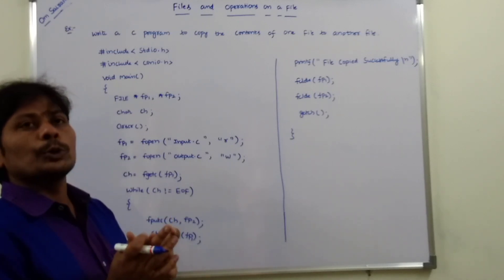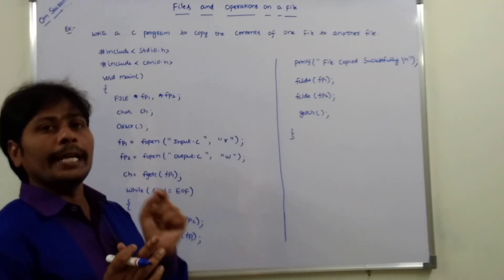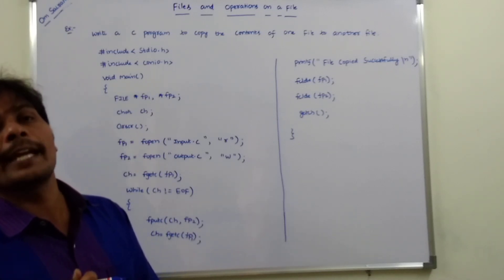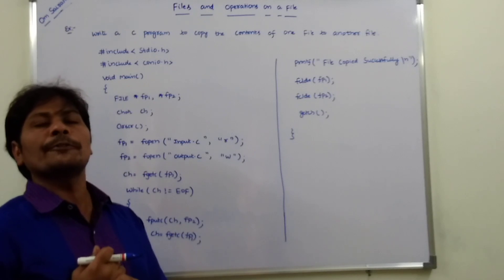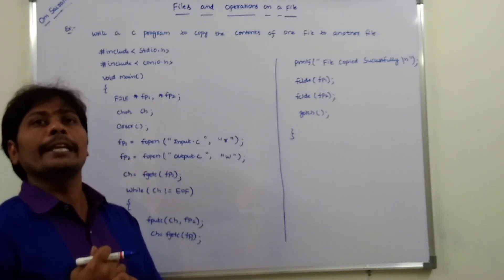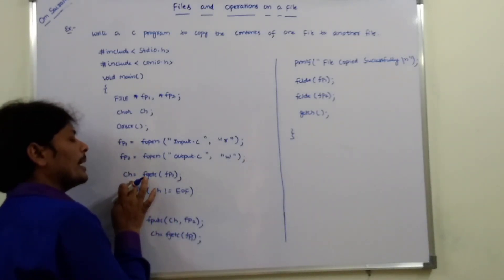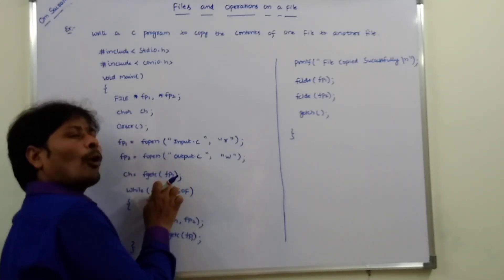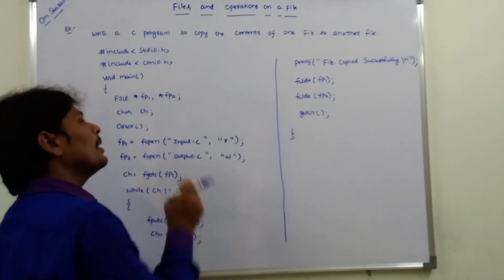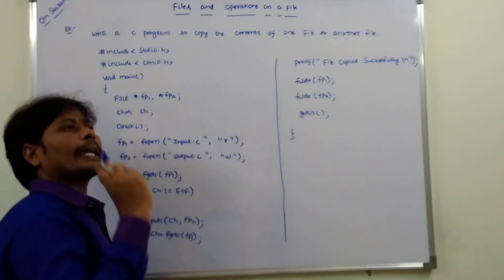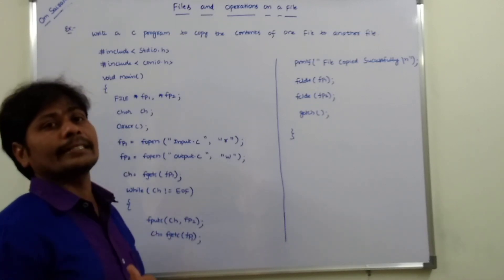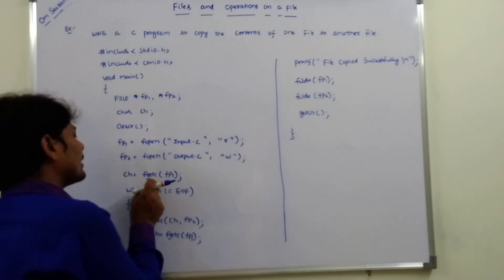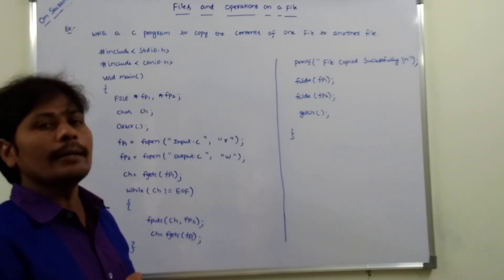Here we have to read the contents of input.c file character by character using the fgetc function. fgetc function is used for reading a character from the given input file. So ch is equal to fgetc of fp1, where fp1 is the file pointer that points to the first character in input.c. Whatever character is read from input.c is assigned to the temporary variable ch.